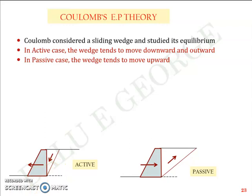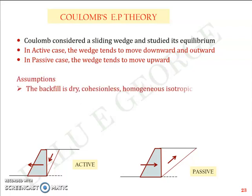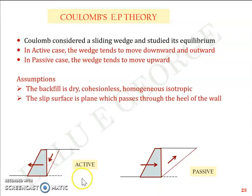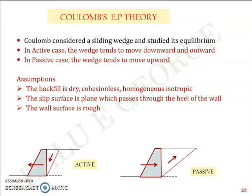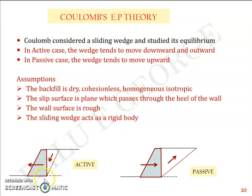Just like any other theory, Coulomb's earth pressure theory does have assumptions. The backfill is dry, cohesionless, homogeneous, and isotropic. The slip surface is planar and passes through the heel of the wall — as you can see in the picture, the slip surface is plain and passes through the heel of the retaining wall. This portion is called the heel and this portion is called the toe. The next assumption is that the wall is rough, meaning there is interaction between the wall and the soil. The sliding wedge acts as a rigid body.